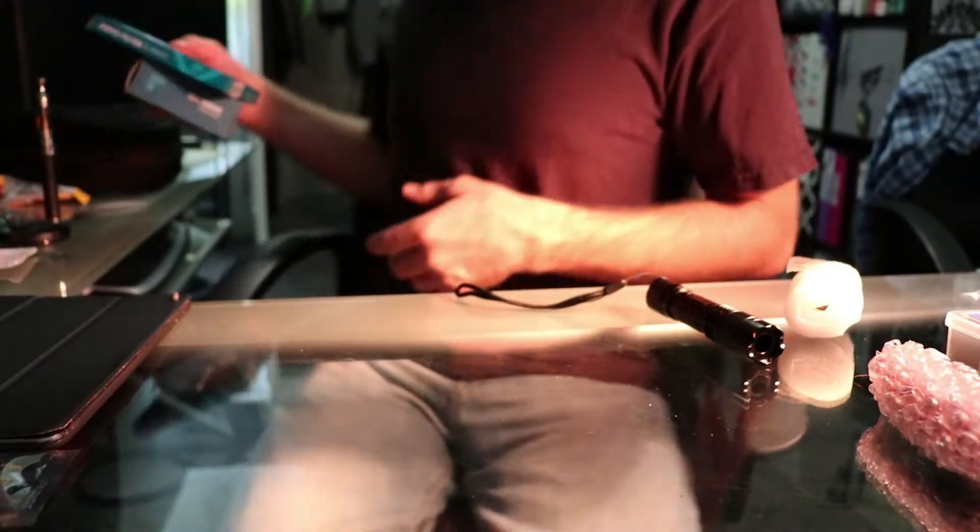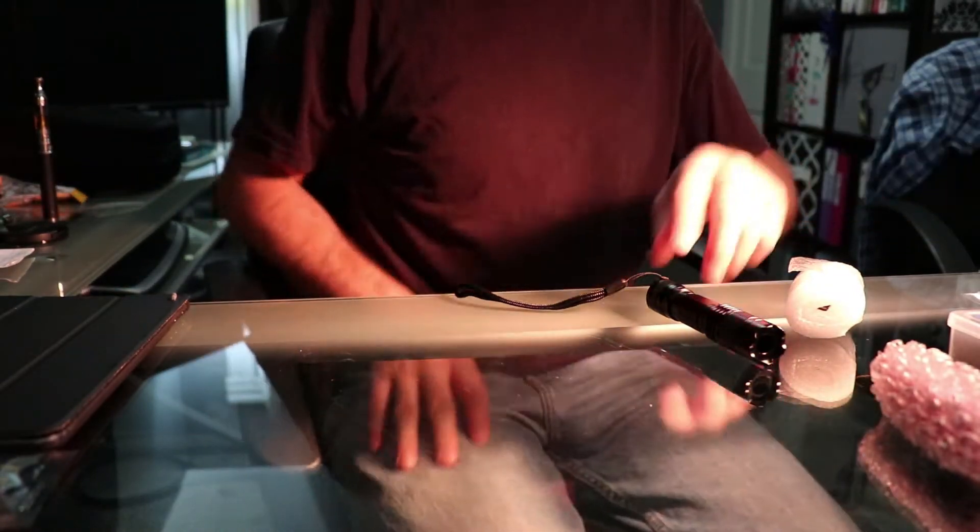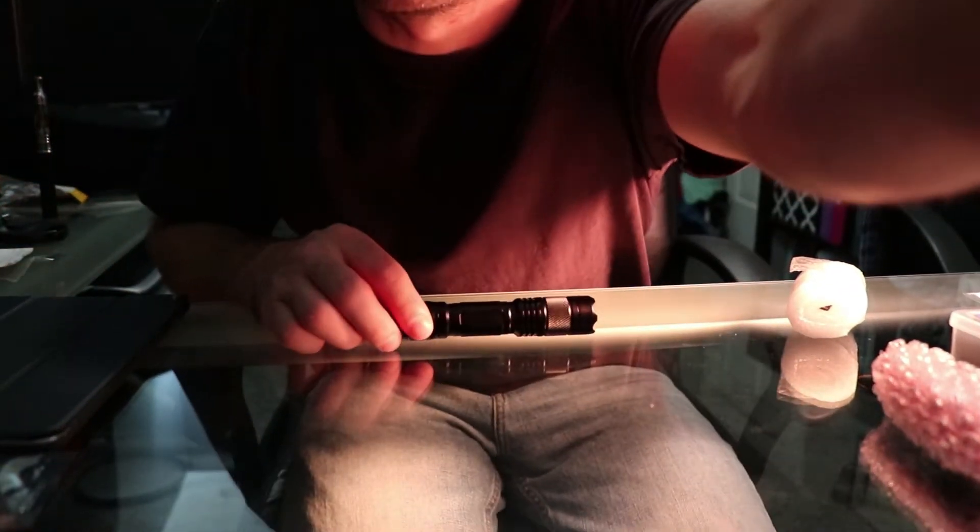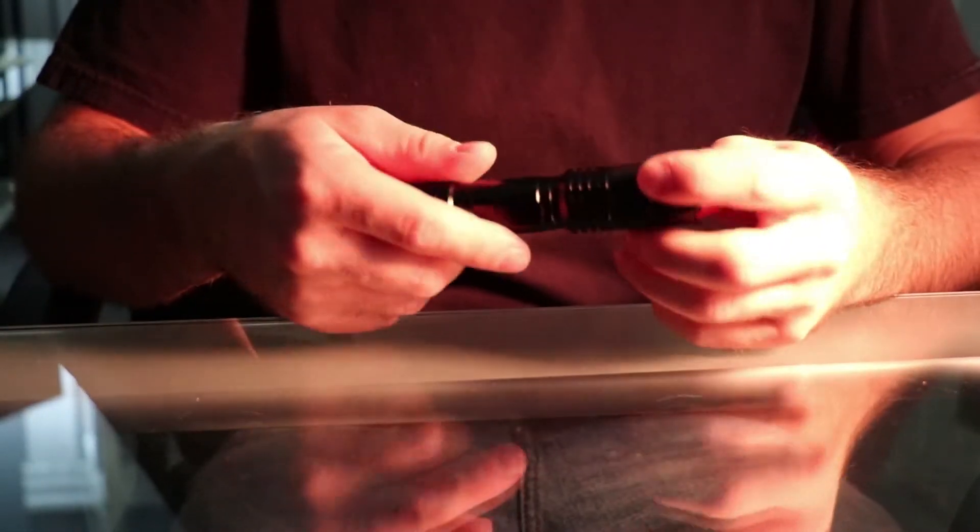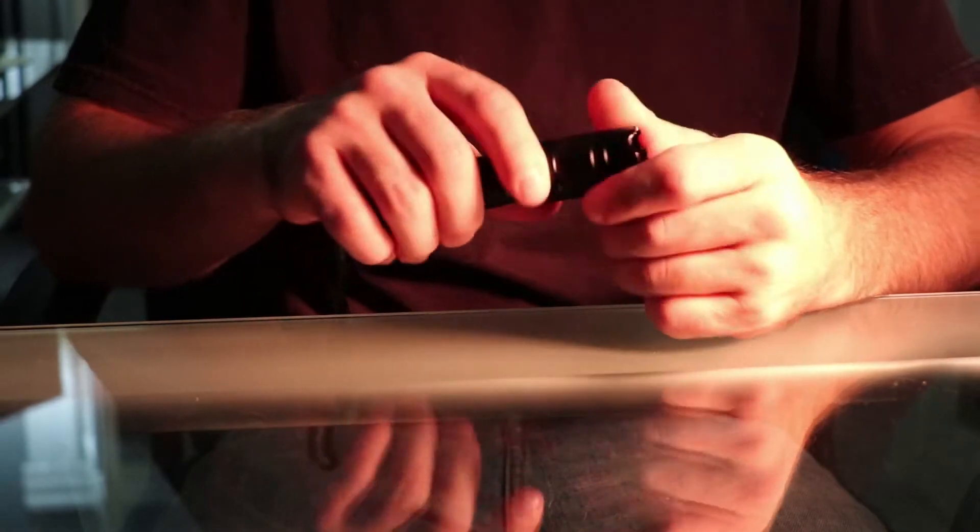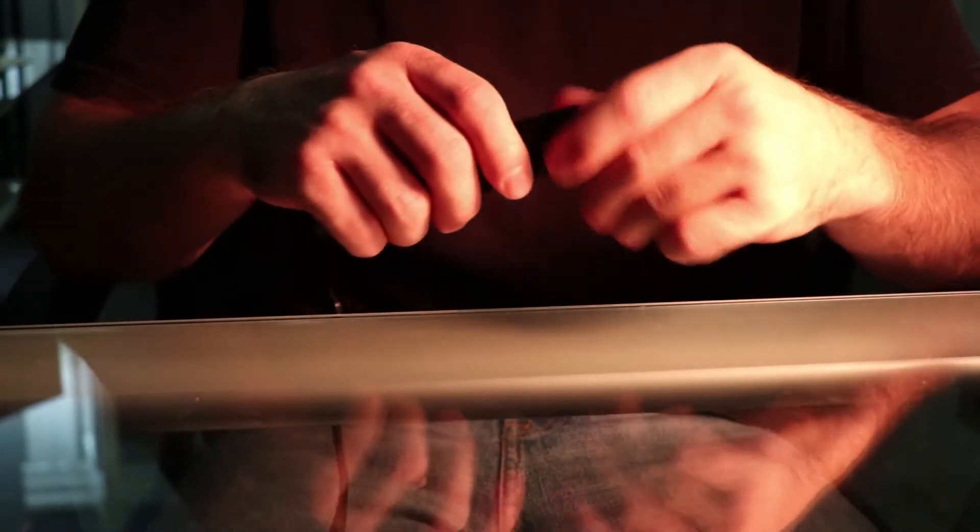First thing you're going to do, let me see if we can see this, first thing you want to do is you want to take your host apart. There's all kinds of different hosts out there that you can find. You can use a mag light if you wanted to, just depends on what kind of laser you're gonna build.